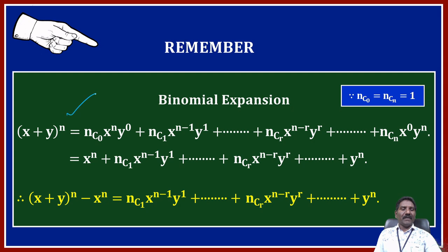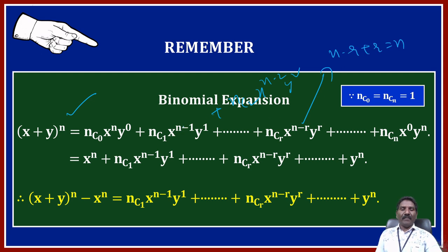x plus y whole power n is equal to nC0 · x^n · y^0, plus nC1 · x^(n-1) · y^1, plus nC2 · x^(n-2) · y^2, plus and so on, nCr · x^(n-r) · y^r. Here the powers always maintain sum n: n minus r plus r is n, and n minus 1 plus 1 is n.